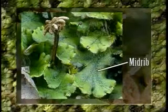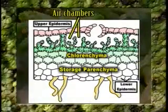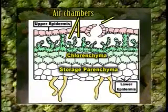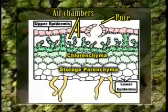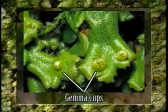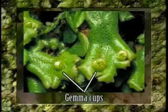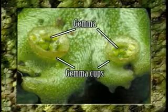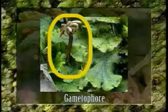The dorsal surface of the thallus is dark green with a broad dark median thickening called the midrib, marked as a shallow groove. It is divided into polygonal or rhomboidal areas called areoles or areoli, which indicate the outline of underlying air chambers. In the center of each areole lies an air pore connecting the air chamber with the external environment. Small cup-like structures called gemma cups are present along the midrib, bearing gemmae that help in vegetative multiplication. The dorsal surface also bears upright branches near the apical notch known as gametophores, which bear sex organs.